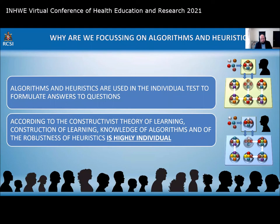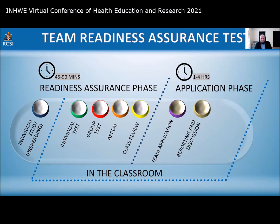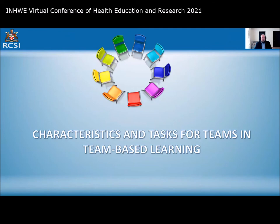Algorithms and heuristics will be used in the individual tests to formulate answers. But according to constructivist learning theory, we must also account for the fact that knowledge construction is highly individual. In the group test, everyone brings highly individualized heuristics and perhaps algorithms to the discussion. Team members bring their individualistic arguments and strategies, based on their own knowledge of facts, algorithms, heuristics, and their understanding of the context and limitations of those heuristics and algorithms.